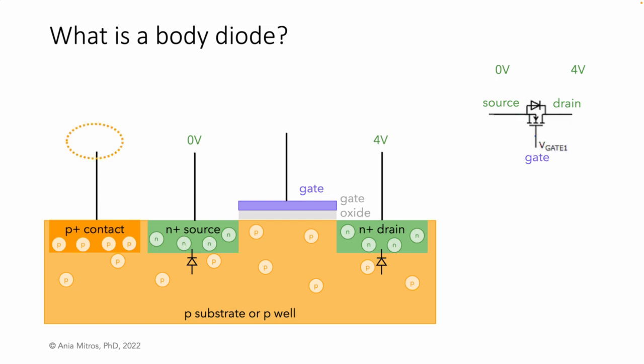Let's look at the p-plus contact to the well next. What voltage shall we apply here? If we apply a positive voltage, we will forward bias the diode to the source. So we don't want to do that. We don't want an always-on diode. We want to apply a voltage that will keep this diode turned off. Of the available voltages, that's zero volts.